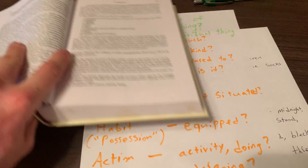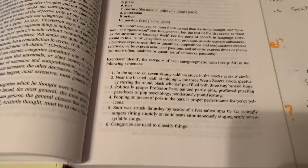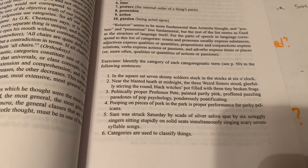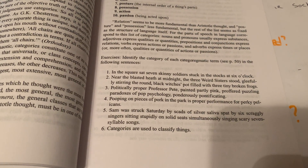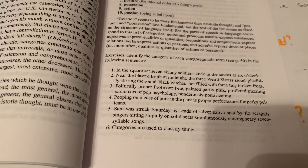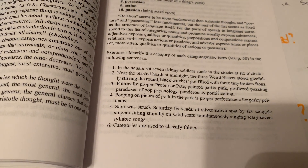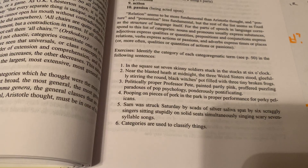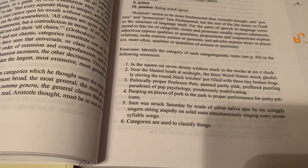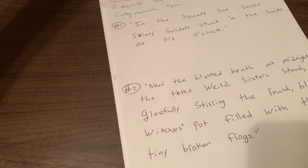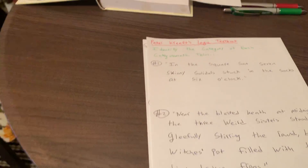We're going to do a few of these problems from the textbook. Peter Kreeft writes that we are to identify the category of each categrammatic term in the following sentences. Recall that a categrammatic term is a term that can stand on its own as a unit of meaning. That's unlike a syncategrammatic term, which cannot. A syncategrammatic term is like a logical connective — like 'and,' 'or,' or the word 'the' — which has no meaning as a unit by itself. It's always connected to something else in a sentence.